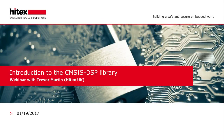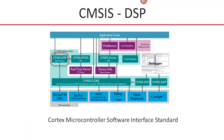Hello, good morning everybody, thank you for joining us. In the last few webinars, we've looked through a number of the different CMSIS standards, or the Cortex Microcontroller Software Interface Standard. These are a number of specifications that try to make C code portable between different tool chains and, to a certain extent, between different microcontrollers. Today I'd like to have a look at the CMSIS DSP library.